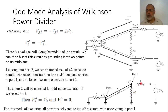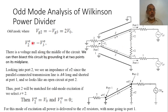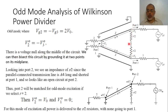This means the required impedance between the two arms of the power divider section should equal two multiplied by the value of the characteristic impedance Z-naught. For the odd mode, where Vg2 equals minus Vg3, there is a voltage null along the middle of the circuit. Since this is positive and this is negative with the same value, there is a voltage null at the midpoint. We can then bisect the circuit by grounding at two points of the mid-plane.